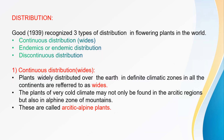Distribution means plants are distributed across different places. A scientist in 1939 recognized three types of distribution in flowering plants: continuous distribution, endemic or endemic distribution, and discontinuous distribution.